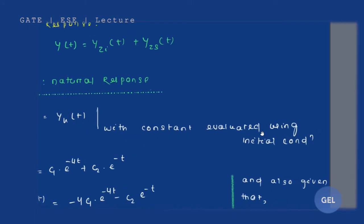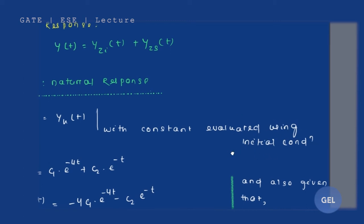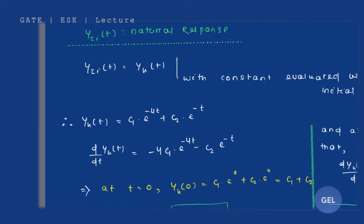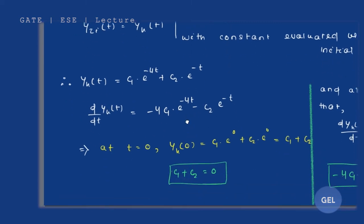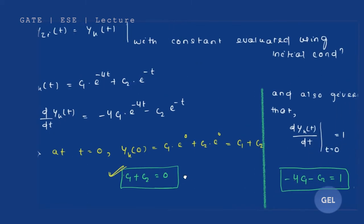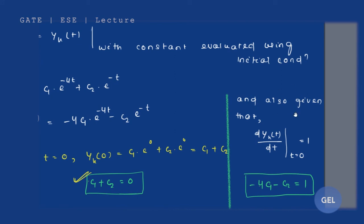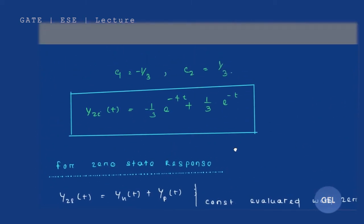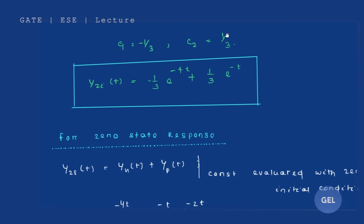The constants in the zero-input response are evaluated using the actual initial conditions. We have yh(t) = c1·e^(−4t) + c2·e^(−t). At t = 0, from the initial condition y(0) = 0, we get c1 + c2 = 0. The derivative at t = 0 is given as 1, giving a second equation. Solving these two equations: c1 = −1/3, c2 = 1/3. So the zero-input response is −(1/3)·e^(−4t) + (1/3)·e^(−t).